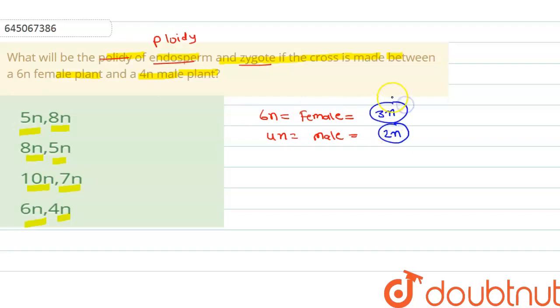Now question is asking about endosperm, so endosperm will be formed by the triple fusion. Triple fusion means two polar nuclei plus one male gamete.